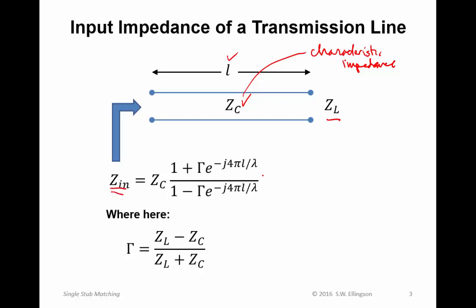The input impedance is given by this equation, which is of course a function of the characteristic impedance, the length, the wavelength in the transmission line, and this parameter gamma. And gamma is the reflection coefficient looking this way. So it is Z_L minus Z_C over Z_L plus Z_C.